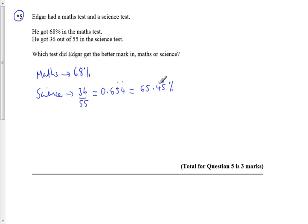So, what we get is that you can see clearly that he's done slightly better in his math than his science, but only slightly better. But you need to write that down. So, Edgar did better in his maths test. Finished.